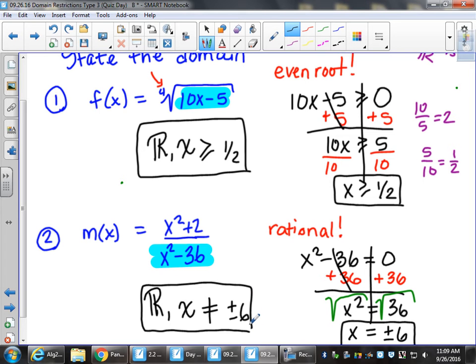What are the three functions that don't have restrictions again? Odd. Odd root. Quadratic. Linear. Linear. Very good. We're ready for our quiz? No. Yes. No. Quick quiz. Five questions. You can use your Frayer model. Everything on your desk needs to leave except the Frayer model.